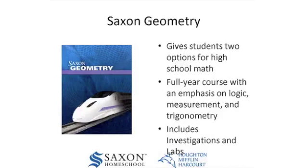Saxon Geometry is a recent addition to the Saxon Upper Grades program. Saxon Algebra 1, Algebra 2, and Advanced Math have geometry instruction incorporated throughout them, because John Saxon believed in keeping all math topics current rather than studying one area of math, such as algebra or geometry, to the exclusion of other topics. For students who wish to study a full year of geometry or face state requirements regarding geometry instruction, we offer a geometry course with rigorous proofs, logical reasoning, trigonometry, and other geometry concepts.